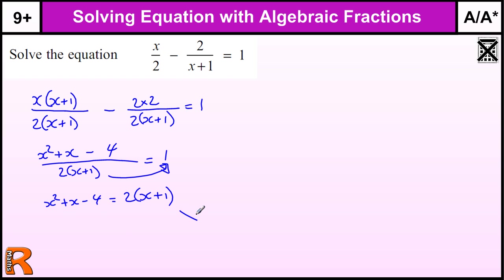Now multiply out the bracket and rearrange. x² + x - 4 = 2x + 2. Taking everything to the left-hand side: x² + x - 2x - 4 - 2 = 0, which gives x² - x - 6 = 0.